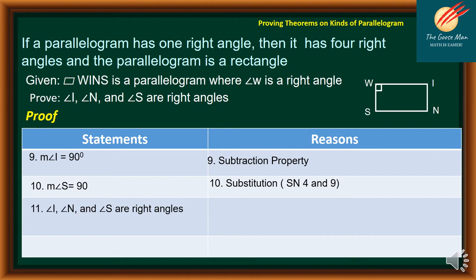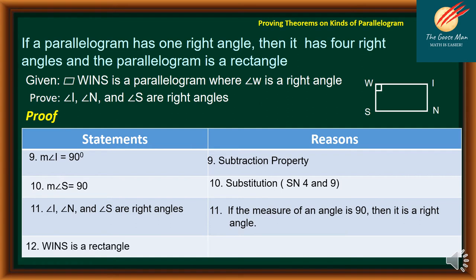Statement 11: angles I, N, and S are right angles — reason: if the measure of an angle is 90 degrees, then it is a right angle. Statement 12: WINS is a rectangle — reason: definition of rectangle. This proves that if a parallelogram has one right angle, then it has four right angles and the parallelogram is a rectangle.